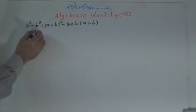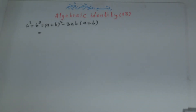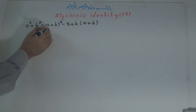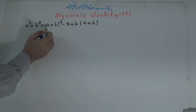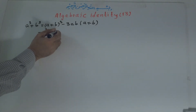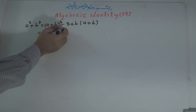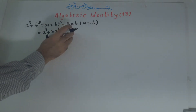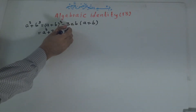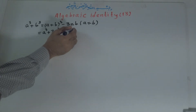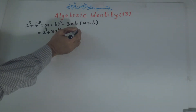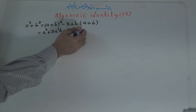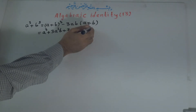So now what we do — we simplify the right side. a plus b, all to the power of 3, according to identity number 3, is a to the power of 3 plus 3a squared b plus 3ab squared plus b to the power of 3.